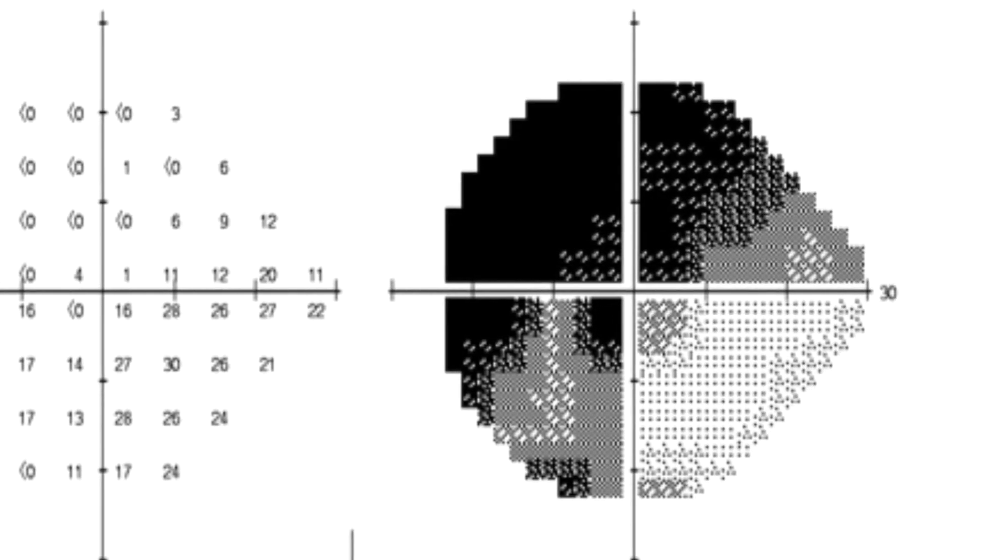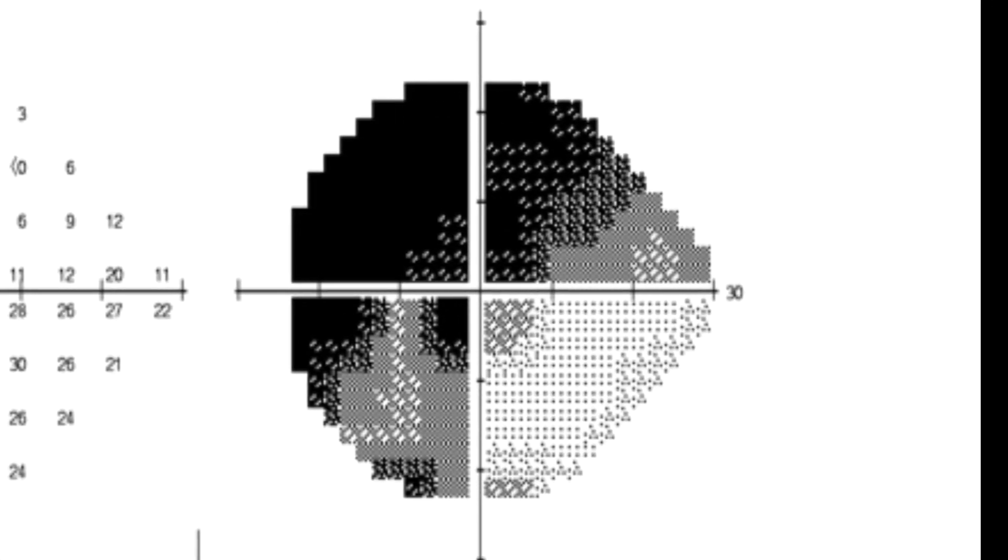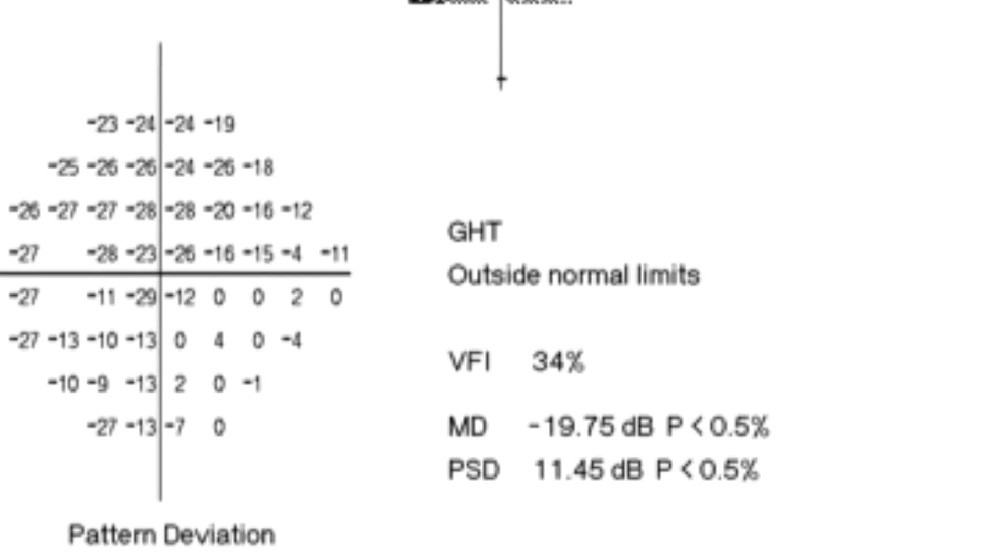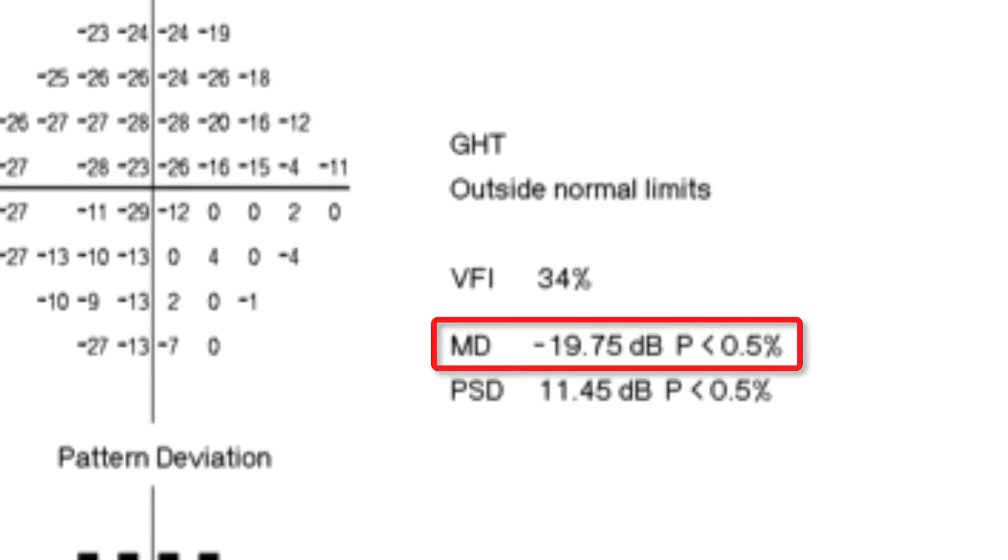Your gaze will naturally go to the grayscale plot, which shows the areas of worst sight in deepest black. By looking at those areas, you can get a quick impression of the pattern of visual field defects. At this point, I usually cast a glance at the mean deviation, which is an average score of the patient's performance. The higher the minus number, the worse the performance.